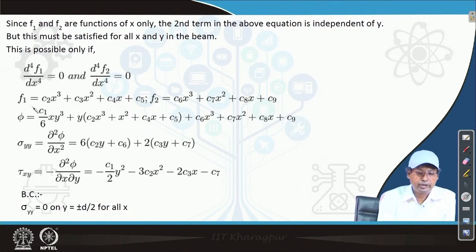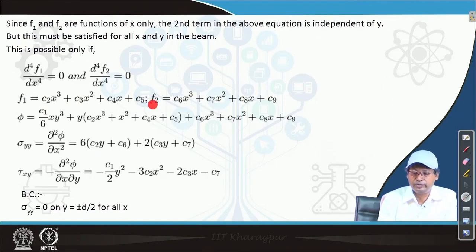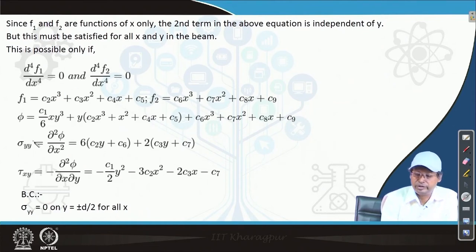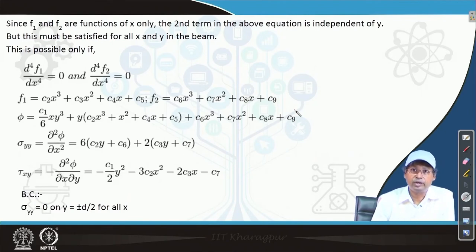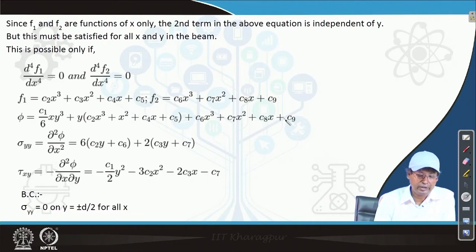Integrating these terms, f1 involves constants c2, c3, c4, c5, and f2 involves constants c6, c7, c8, c9. So the stress function phi involves 9 constants total — c1 through c9 — which we need to find. To find those constants we need to apply the boundary conditions. With the constants in place we can find expressions for sigma_yy and tau_xy.